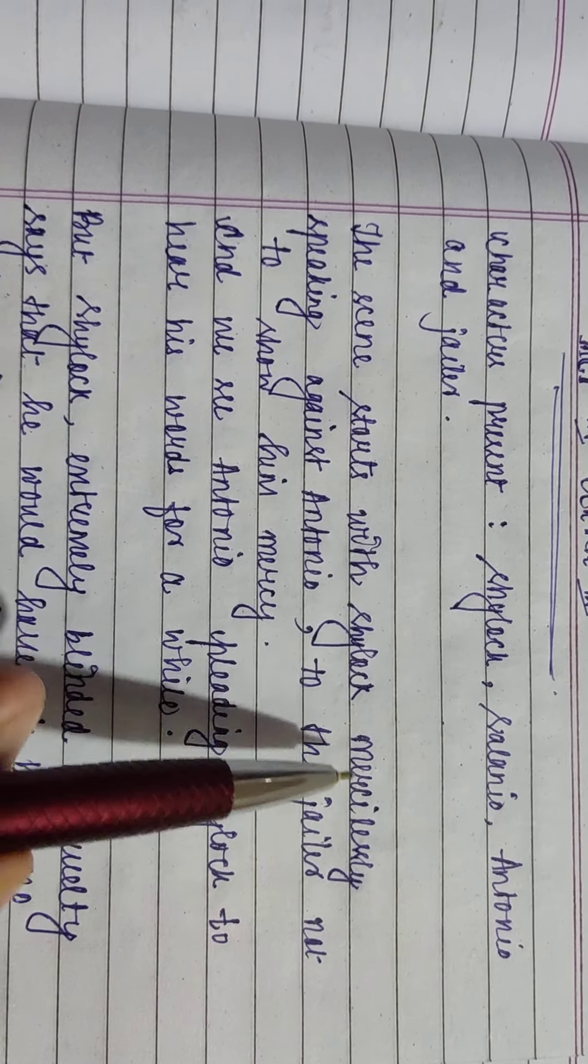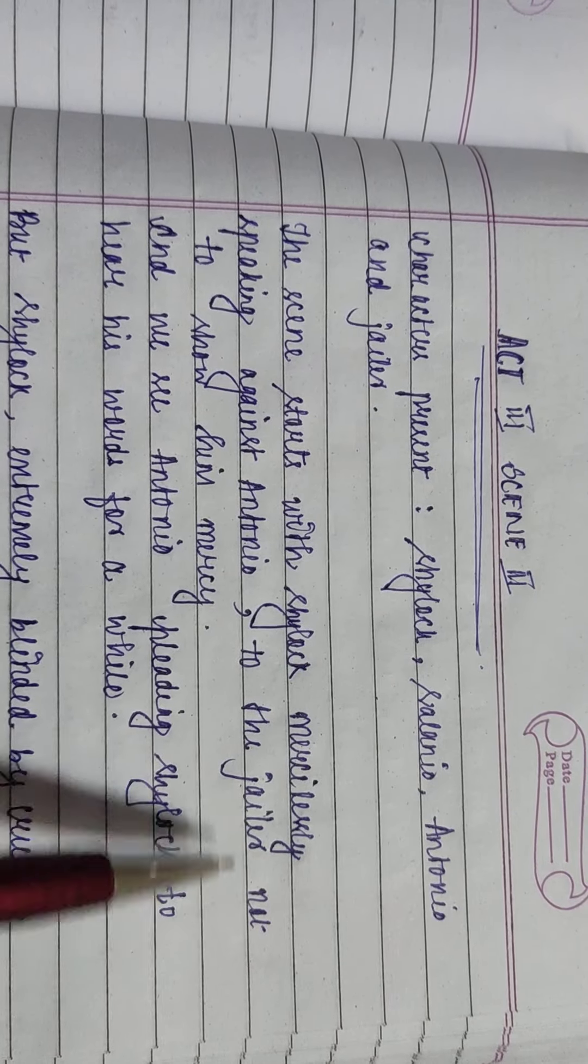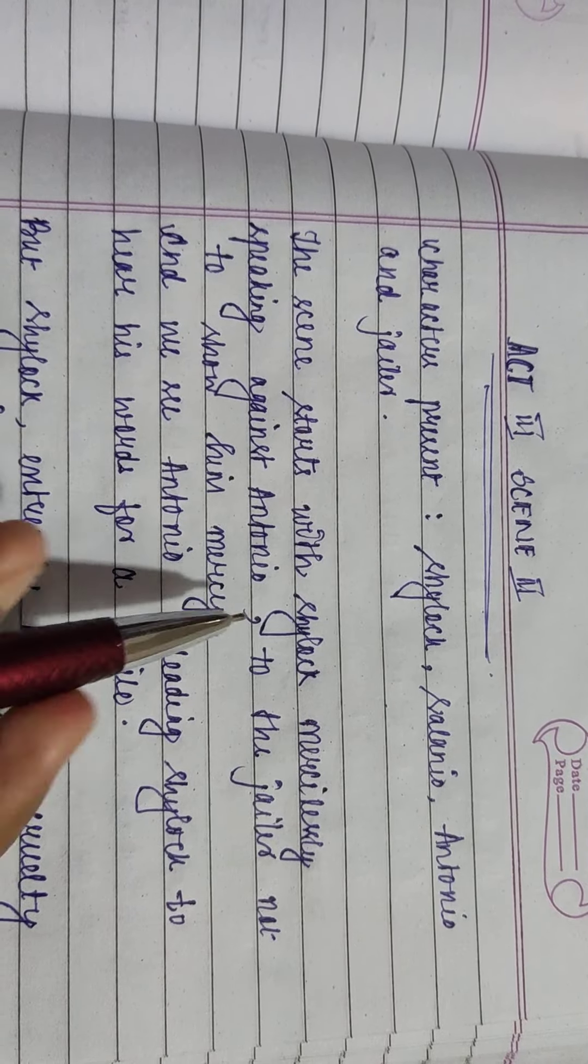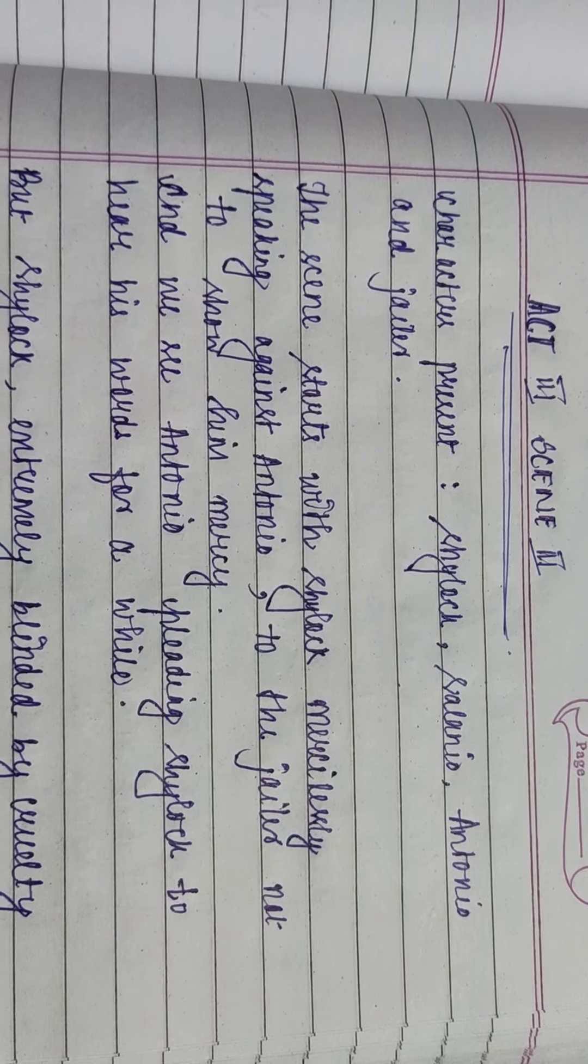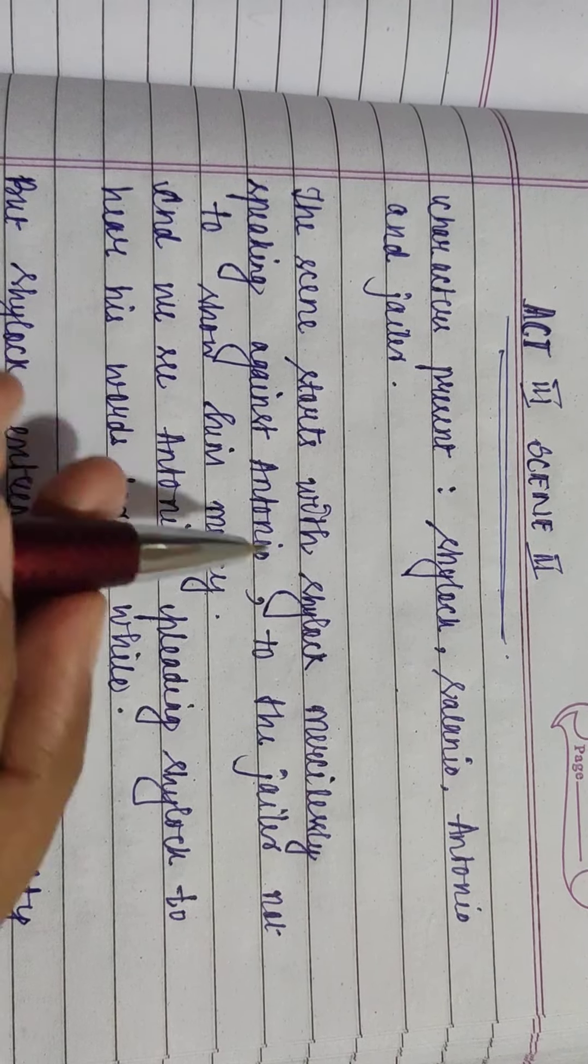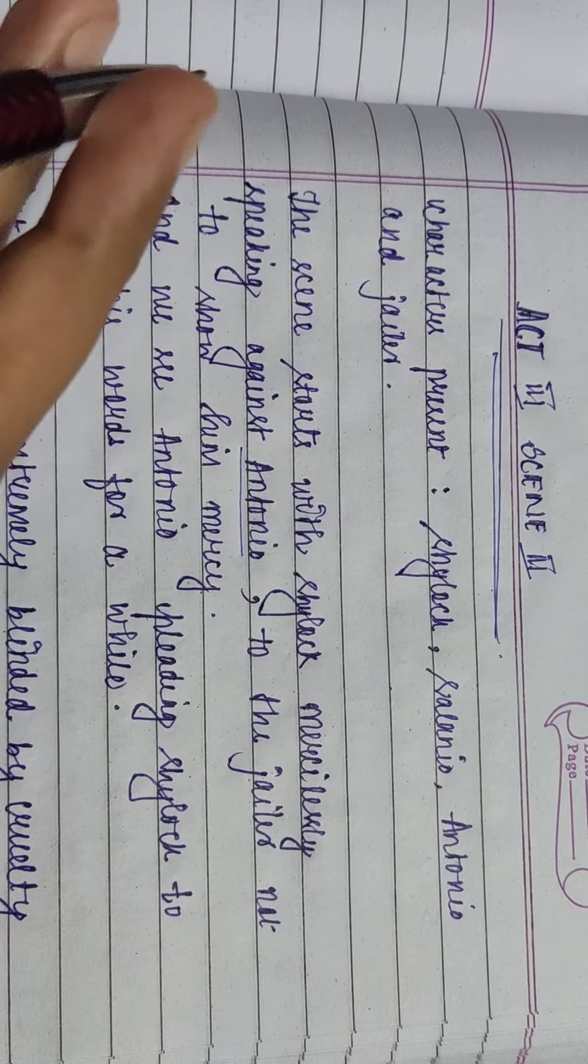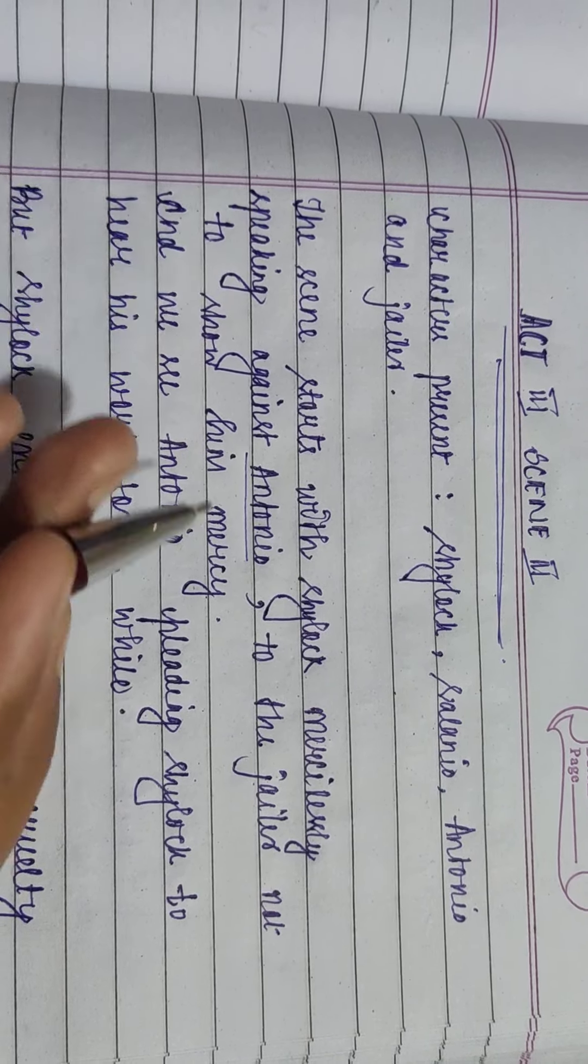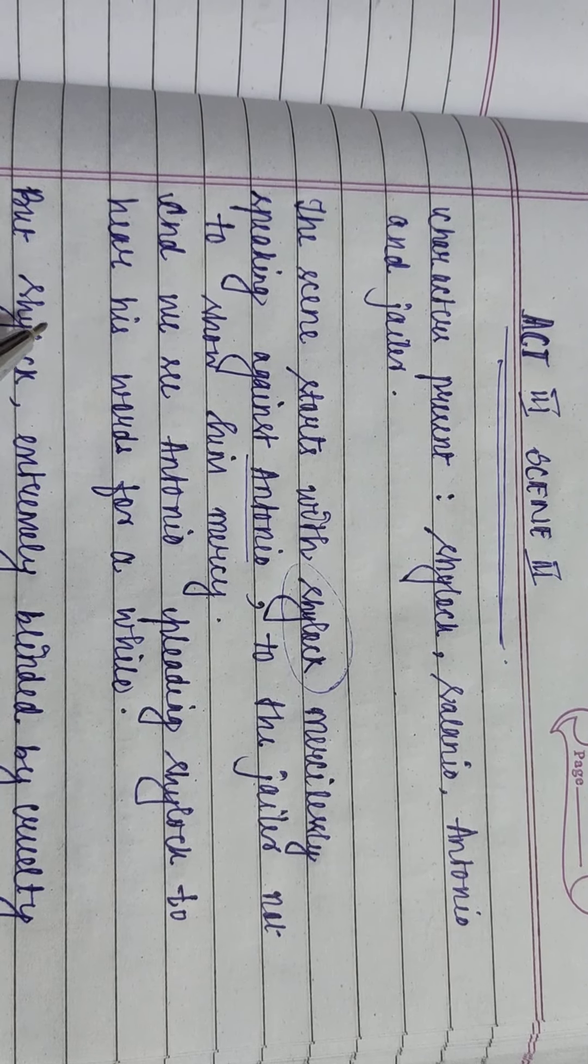The scene starts with Shylock mercilessly speaking against Antonio to the jailer, not to show him mercy. We have already seen that Antonio wrote a letter to Bassanio saying that all his ventures have failed and he is suffering financial loss. So Shylock was extremely confident that Antonio would lose the bond and he'll be winning a pound of flesh from Antonio's body.